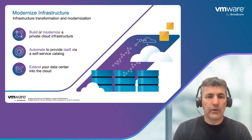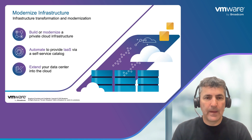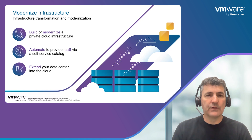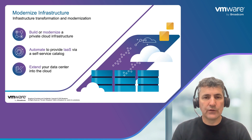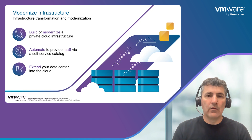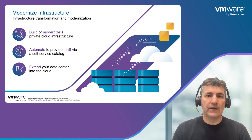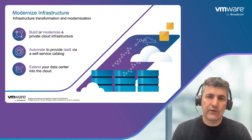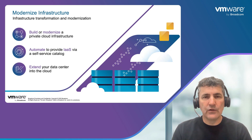In addition, we're talking about incorporating software-defined storage and software-defined networking as part of this. We also have to be cognizant of the fact that end users need to be able to consume this infrastructure. To do that, we'll be talking about some of the tight integration we have with VCF automation in order to provide this infrastructure as a service capability, where we can provide infrastructure as a service through a self-service catalog so that end users can come in and consume this private cloud.